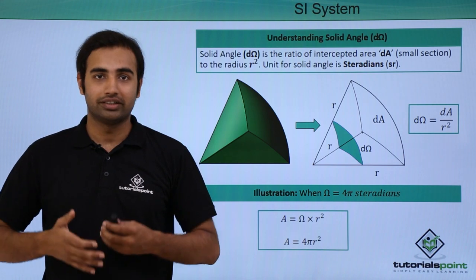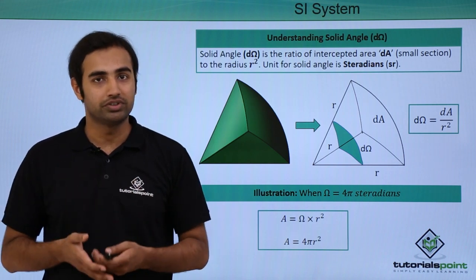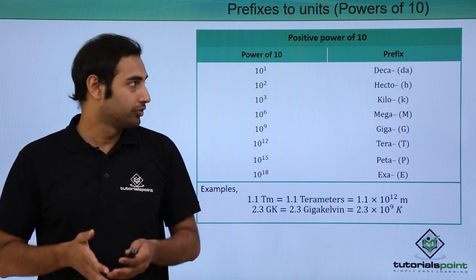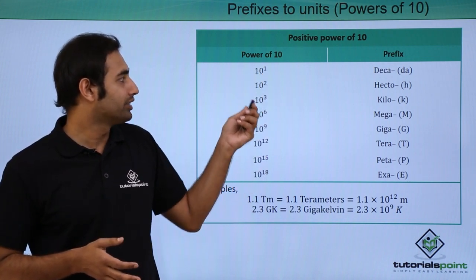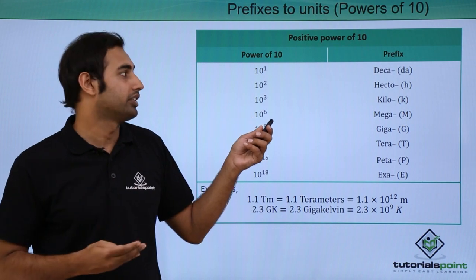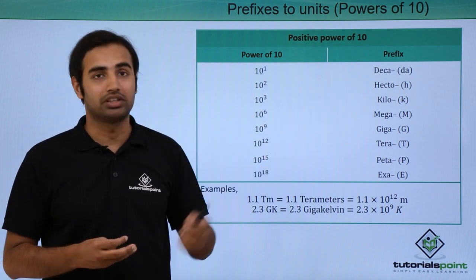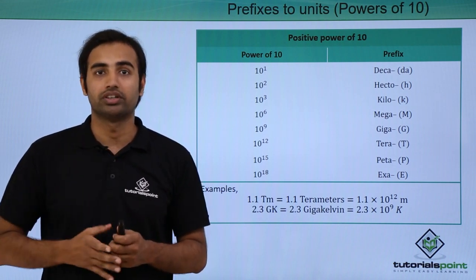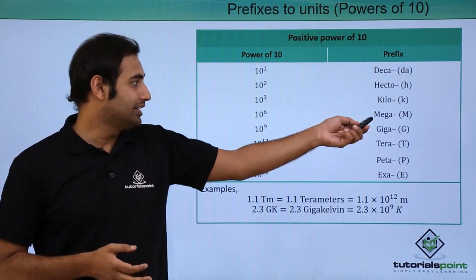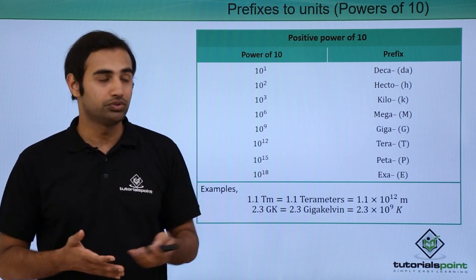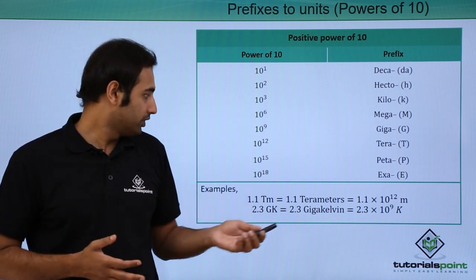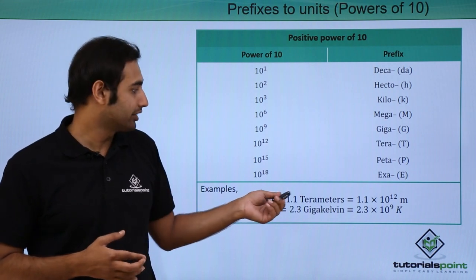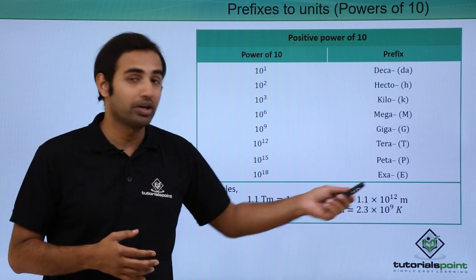Now let's talk about the different prefixes we use with units to express different magnitudes. For example, 10¹, 10², and 10³ times a unit are expressed as deca, hecto, and kilo respectively. So 1000 grams can also be called 1 kilogram. Similarly, 1.1 terameters can be written as 1.1 × 10¹² meters, and 2.3 gigakelvin can be written as 2.3 × 10⁹ kelvin.